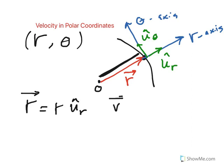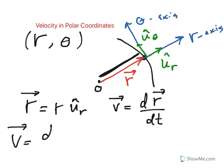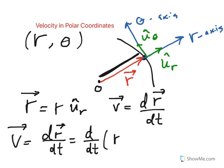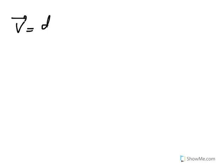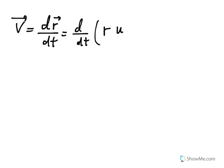Velocity is defined as the rate of change of the position vector R. So if we take the derivative of the position vector R, that is the derivative of the vector with magnitude R along the unit vector U sub R. Moving to the next page: velocity is the derivative of R vector, which is d/dt of R times U sub R.